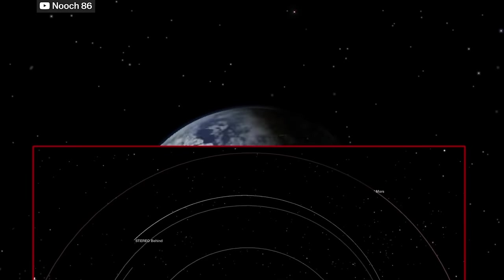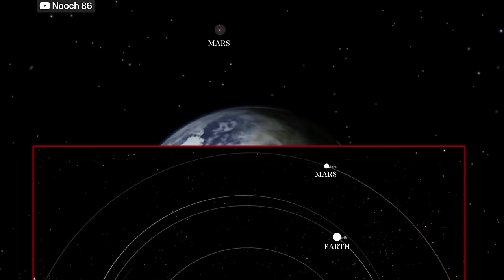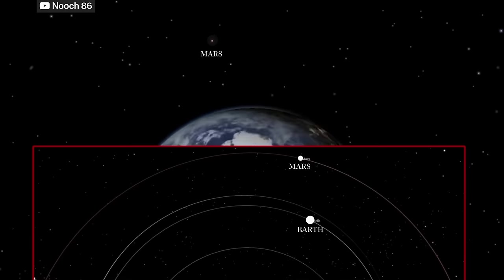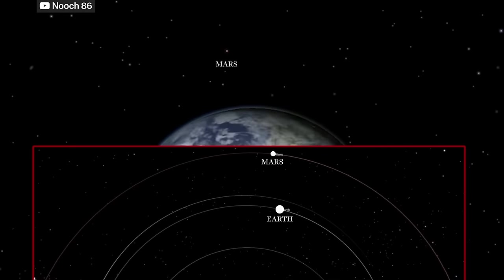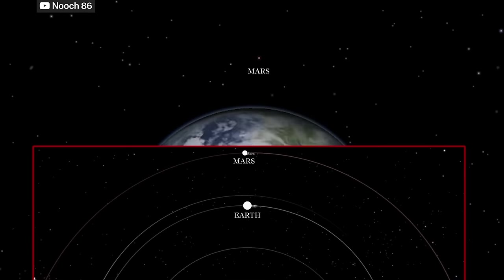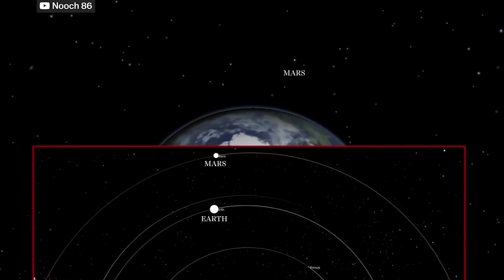Here's another visualization of the retrograde loop of Mars as Earth passes it. The bottom part shows the positions of the planets, and the top is the corresponding view of Mars from Earth. The key is to always remember that Earth is moving, too.